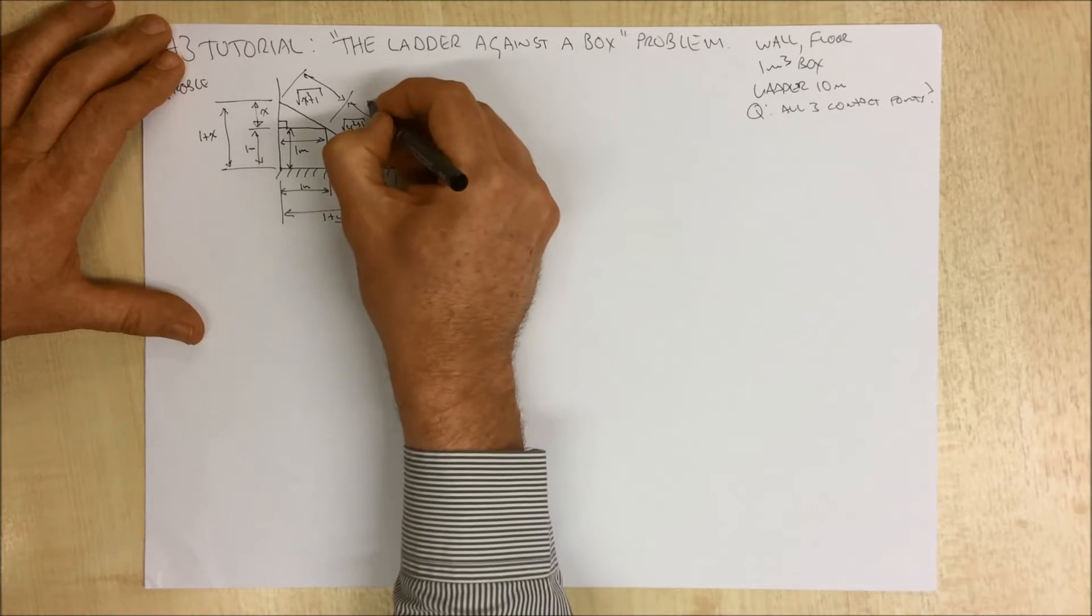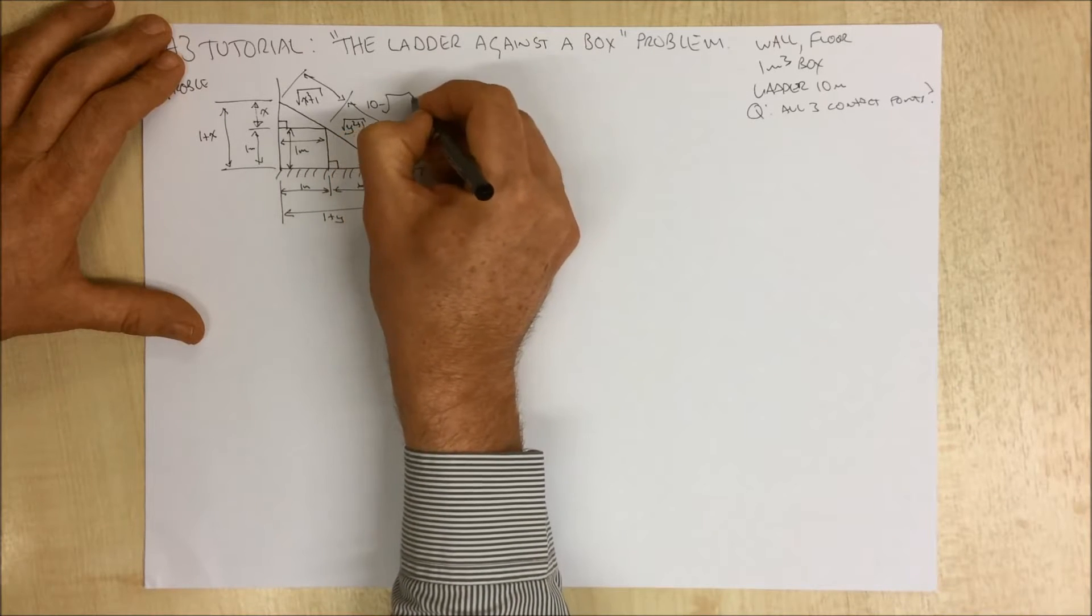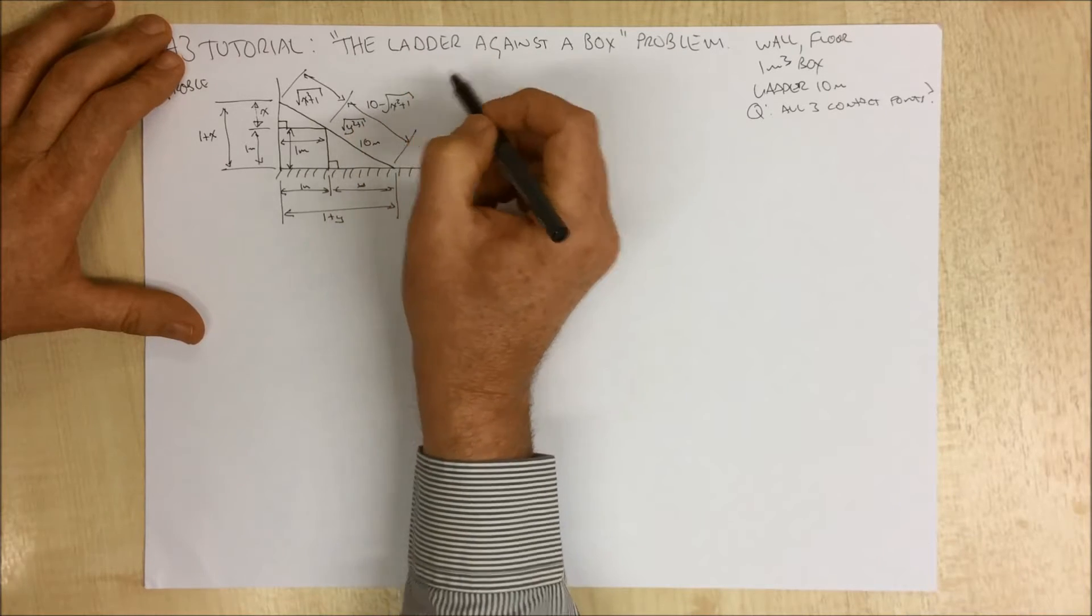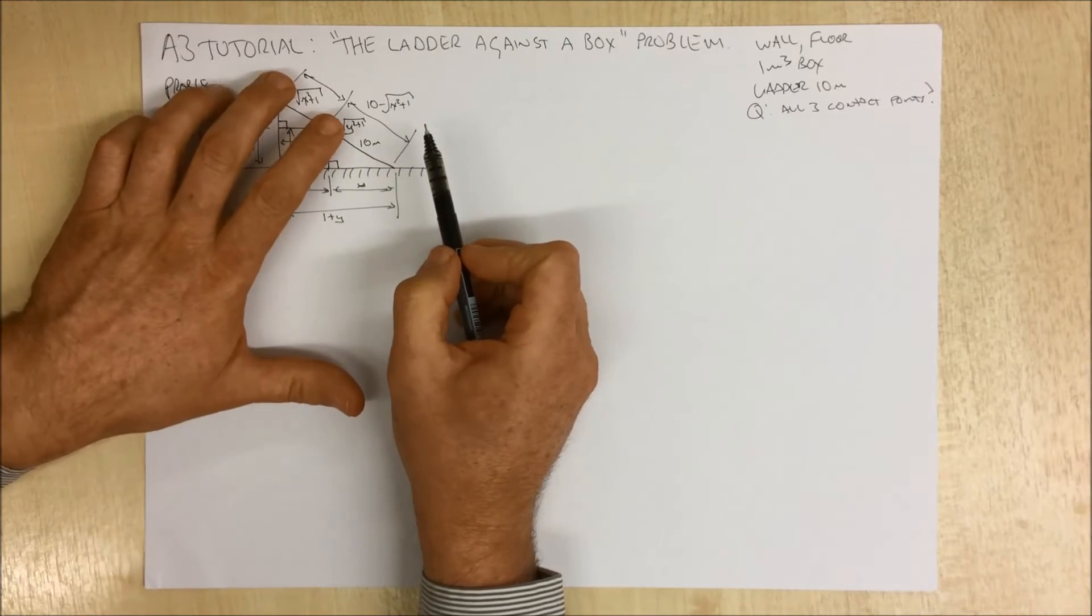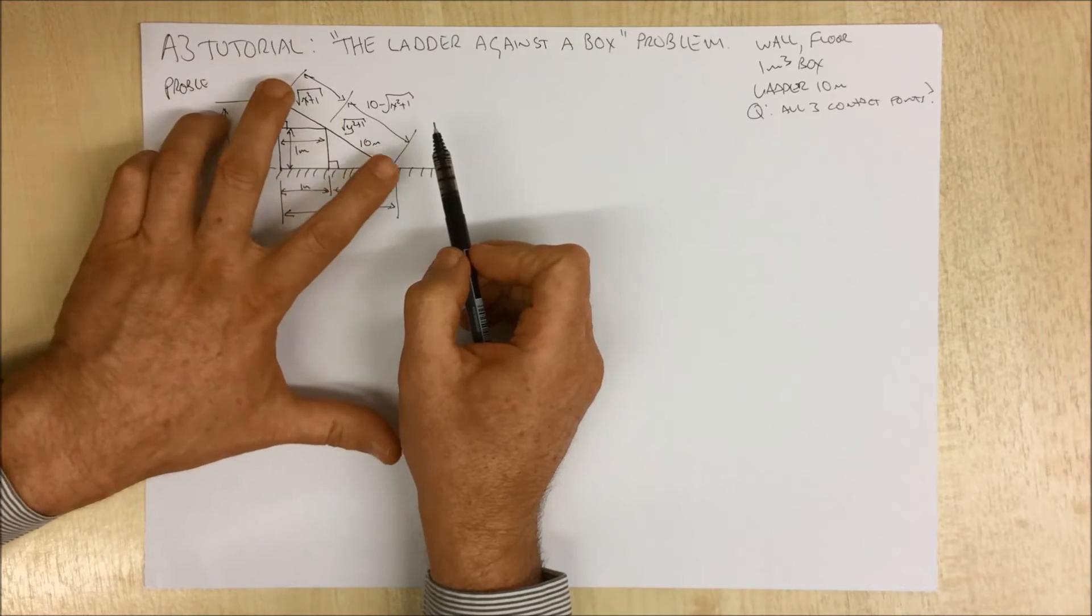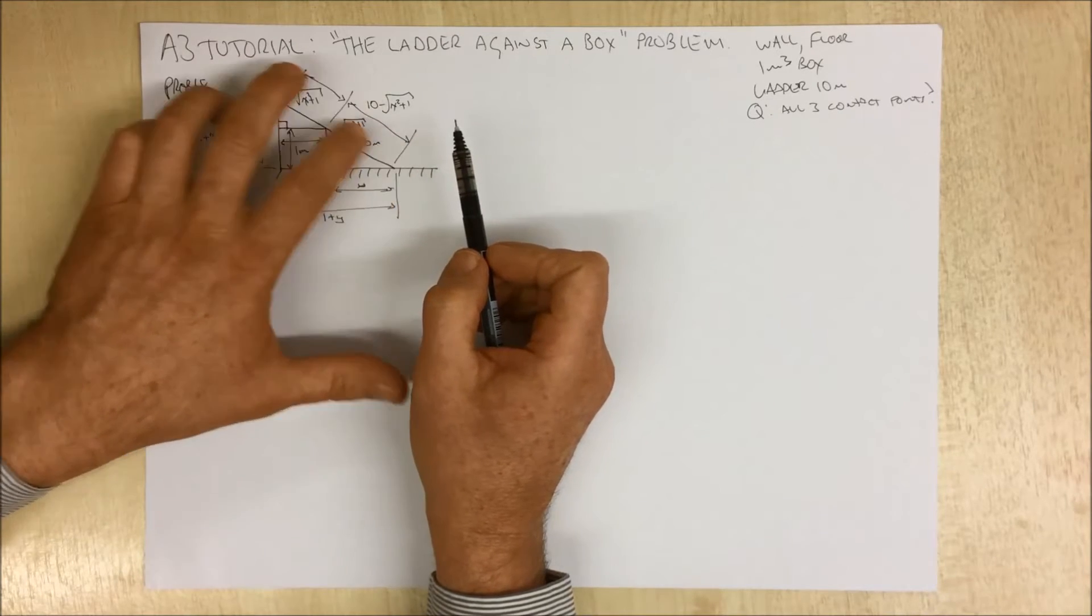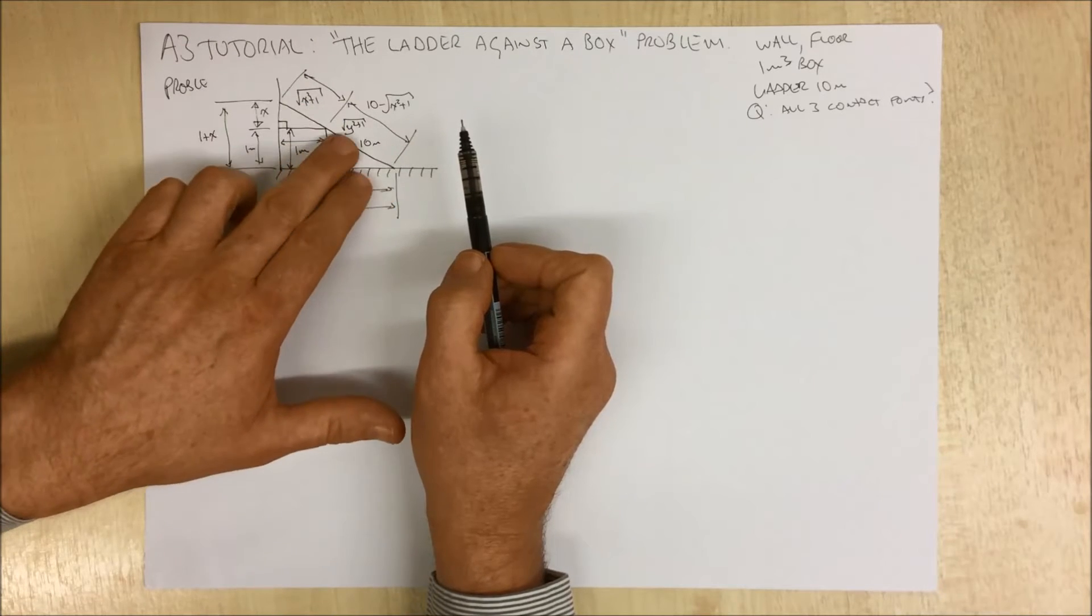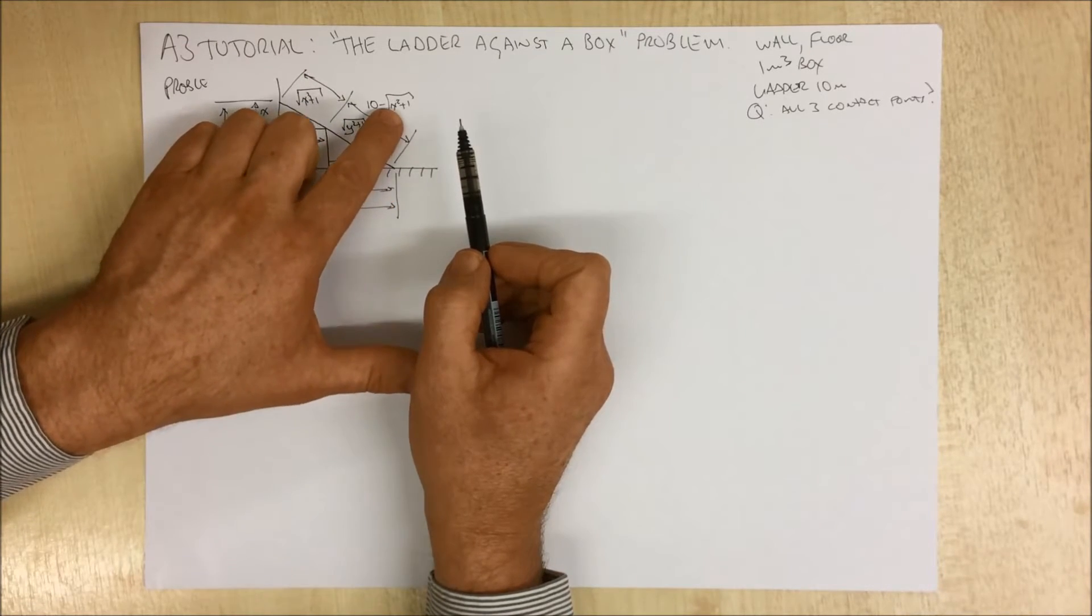Instead of calling it the square root of y squared plus 1, we can call it 10 minus the square root of x squared plus 1. Basically we know that this is 10, so this distance here is 10 minus this distance. Now we've got this distance defined not in terms of y but in terms of x.